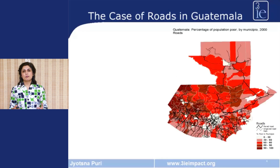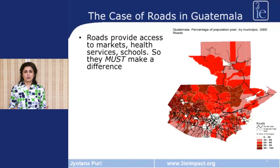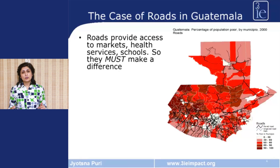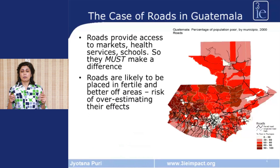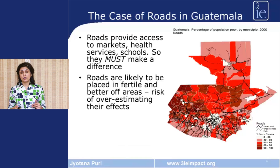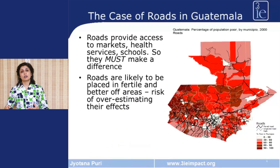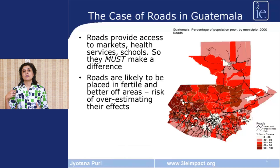Many years ago when I was working for the World Bank, I was asked the question: what is the impact of road-related work on poverty? The question is a very tricky one, and it was essentially posed for Guatemala. You can imagine that roads would have a positive impact on poverty — roads provide access to markets, to health services, to schools, so they must make a difference. But roads also tend to be placed in areas where people are much more educated, the area is very fertile, and where people are much more successful in lobbying for those roads in their areas. This means that if you look at the attributes in a naive model of the people located in areas where road-related works have been undertaken, you might risk overestimating the impact of roads.